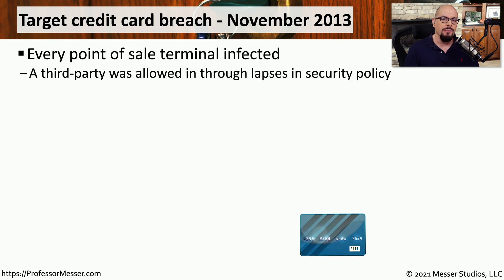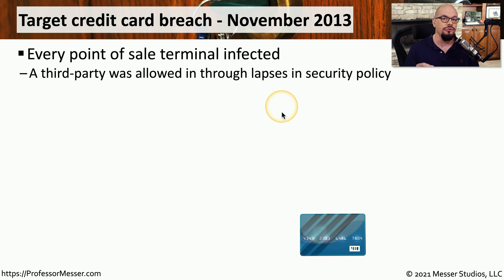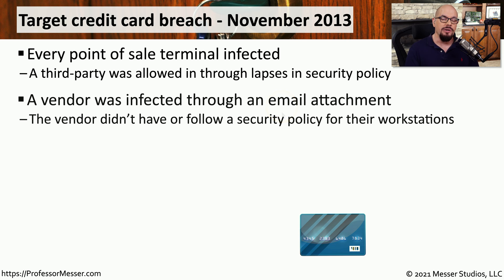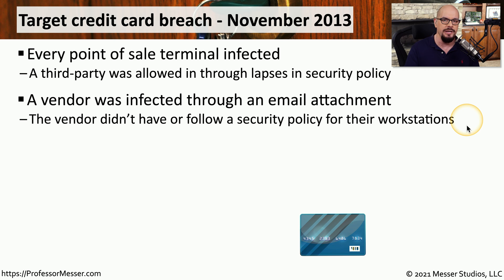An example of a third party not following security policies and causing an enormous breach occurred in November of 2013 with Target. Every point of sale terminal in the Target network was infected with malware that was collecting and transferring credit card information outside the Target network. This started with an HVAC vendor who got infected prior to connecting to the Target network through an email attachment, and they had no antivirus or anti-malware on their workstations.